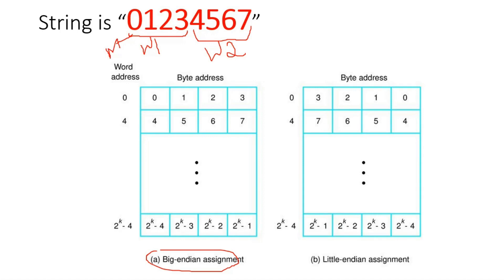According to big endian, the most significant byte sits in the least significant address. So '0' is stored first, then '1', then '2', and finally '3'. Then for word 2, '7' is the least significant byte and '4' is the most significant byte. So we store '4' first, then '5', then '6', and then '7' at the last address. The data inside every cell represents characters stored using big endian format. Note that only word addresses are shown here, not byte addresses.